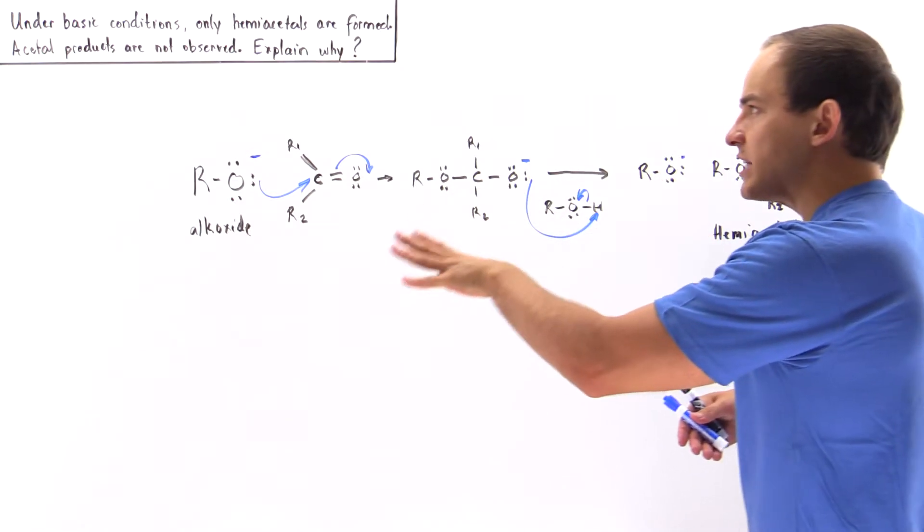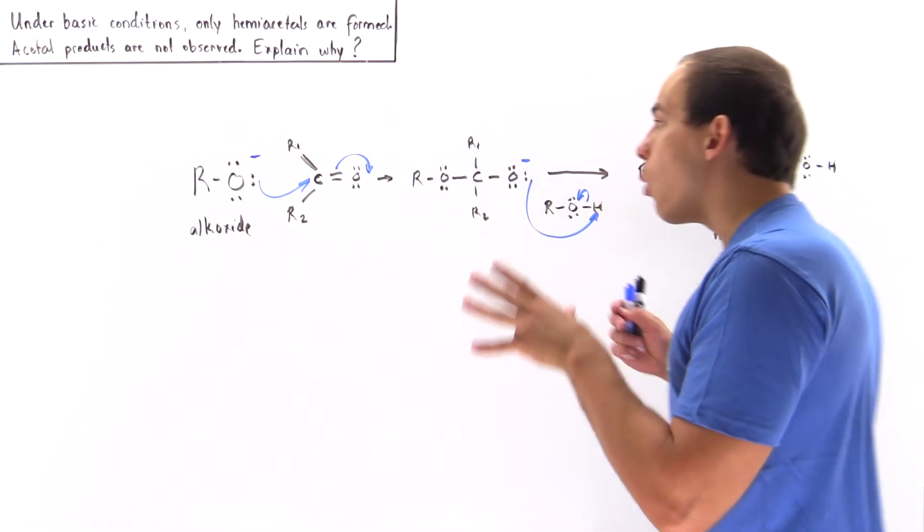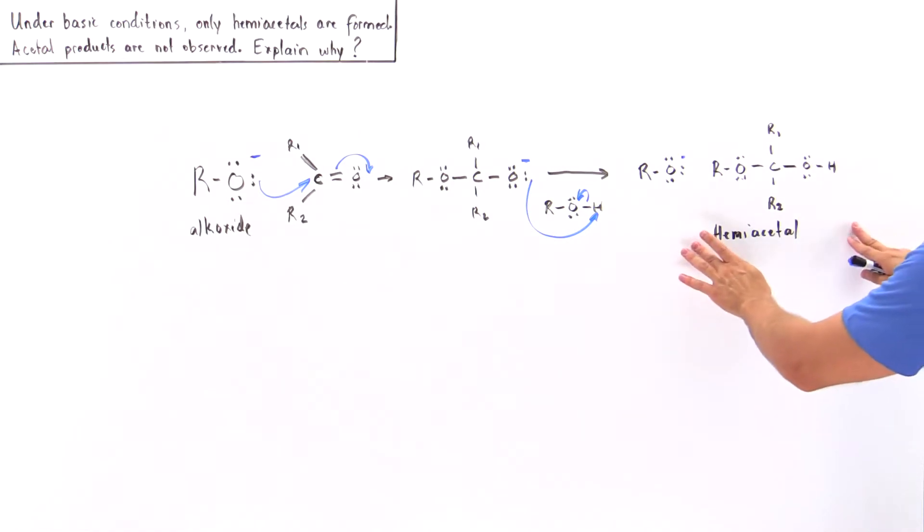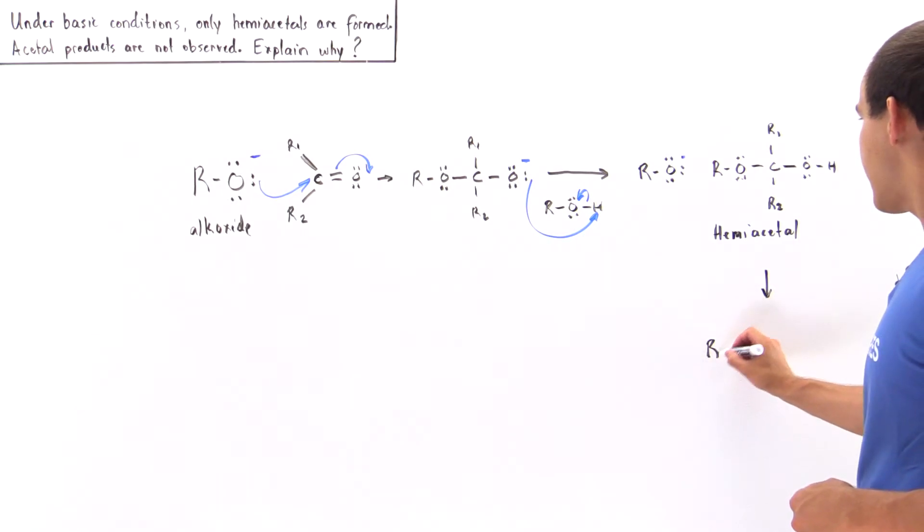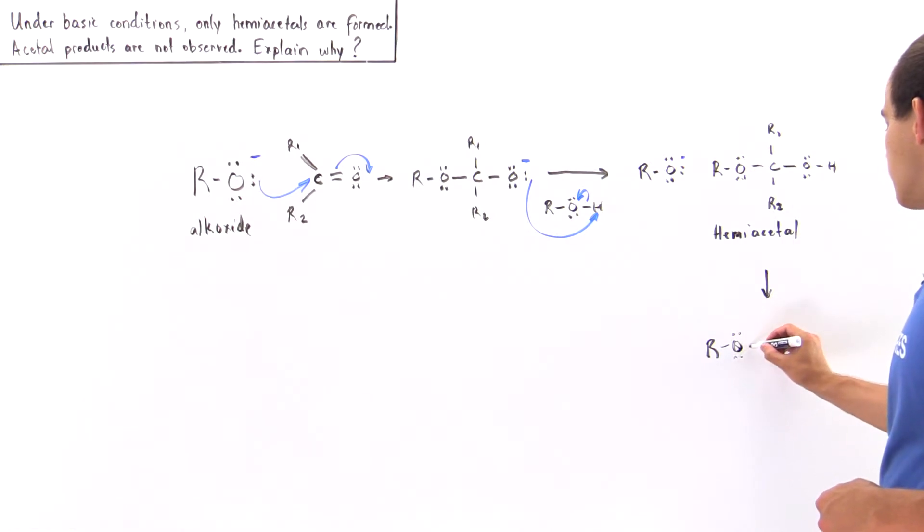Now the question that we want to answer is why cannot we go from the hemiacetal to our acetal. The acetal has our alkoxide group, the C, the R1, the R2, and this hydroxide is replaced with yet another one of these alkoxides. So why doesn't this actually take place?